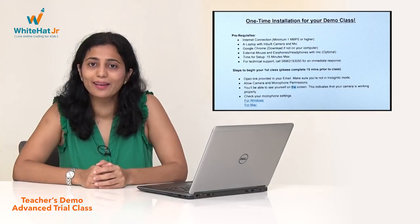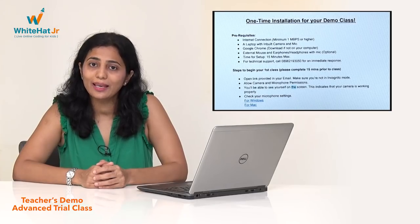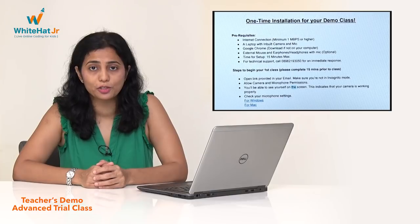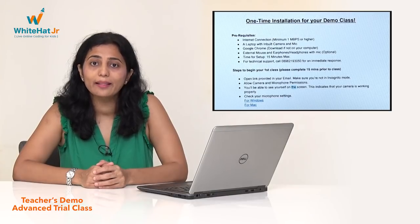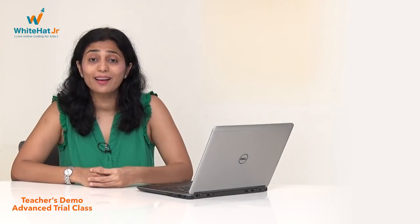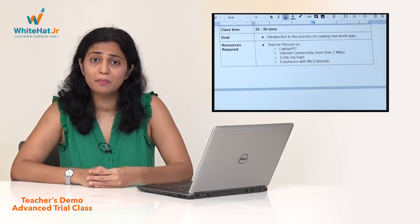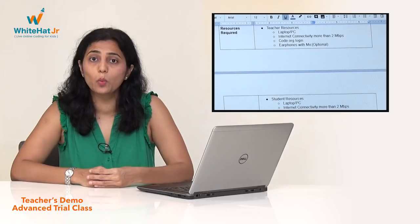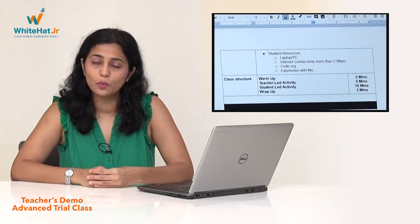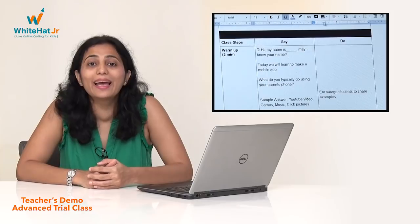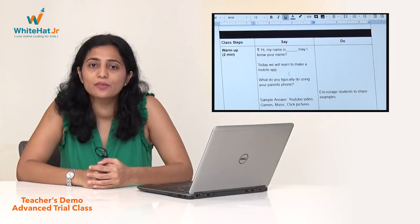Step 1: Get Tech Ready. Open the technical document attached in the email. Follow the instructions to ensure the mic and the camera grant permissions to the White Hat online platform. Step 2: Get Class Ready. Open the prep document attached in the email and read the lesson plan. It tells you what to say and what to do while conducting the class. Each class is structured as follows.